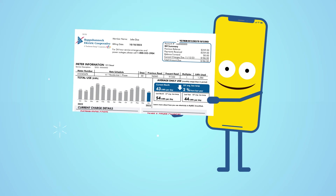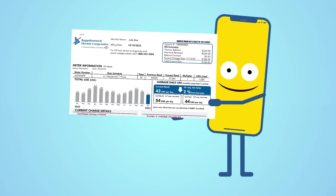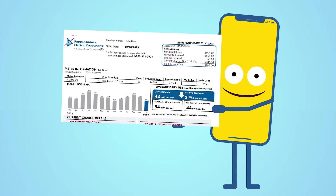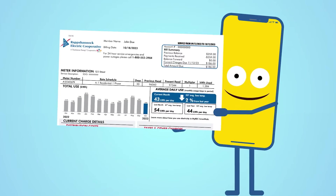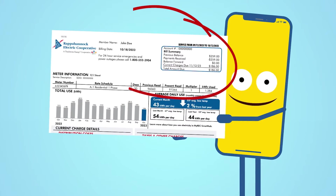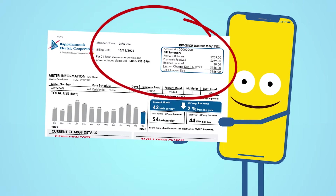The first thing to know is that when you get your bill each month, it represents the amount of electricity you used for the previous month. You can find that important information at the top of your bill.